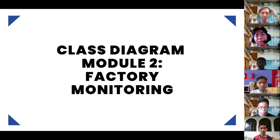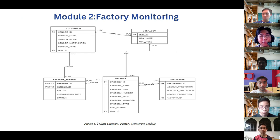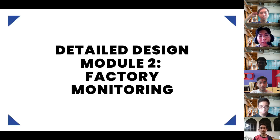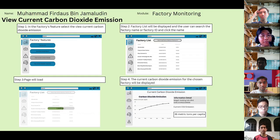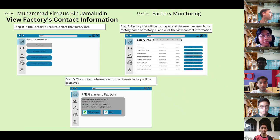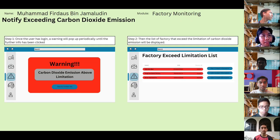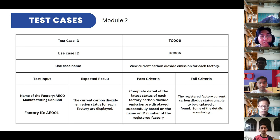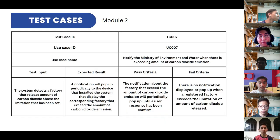Next is the class diagram for module two, factory monitoring. There are five entities with their own relationships: CO2 sensors, user government, factory prediction, and factory sensor. For the detail design GUI of module two: the first GUI allows us to view current carbon dioxide emissions through the website. Next, we can view factories' contact information, and notifications are sent if there is any exceeding carbon dioxide emission. The first test case is viewing current CO2 emissions for each factory, and the second is notifying the Ministry of Environment and Water when there is an exceeding amount of CO2 emission.